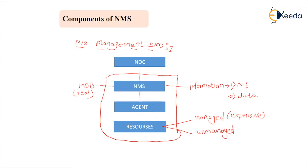NMS itself acts as a manager that saves data about multiple agents and multiple resources present inside the network — not only their present state data but also their past state data. That is why the MDB is known as the real database.